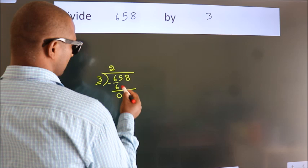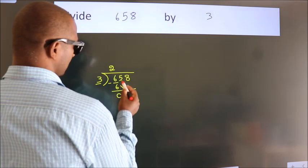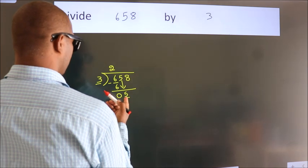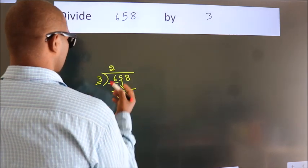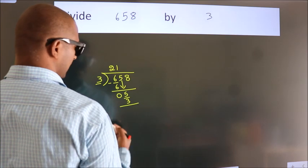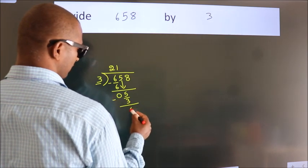After this, bring down the beside number, so 5 down. A number close to 5 in 3 table is 3 1's, 3. Now we subtract, we get 2.